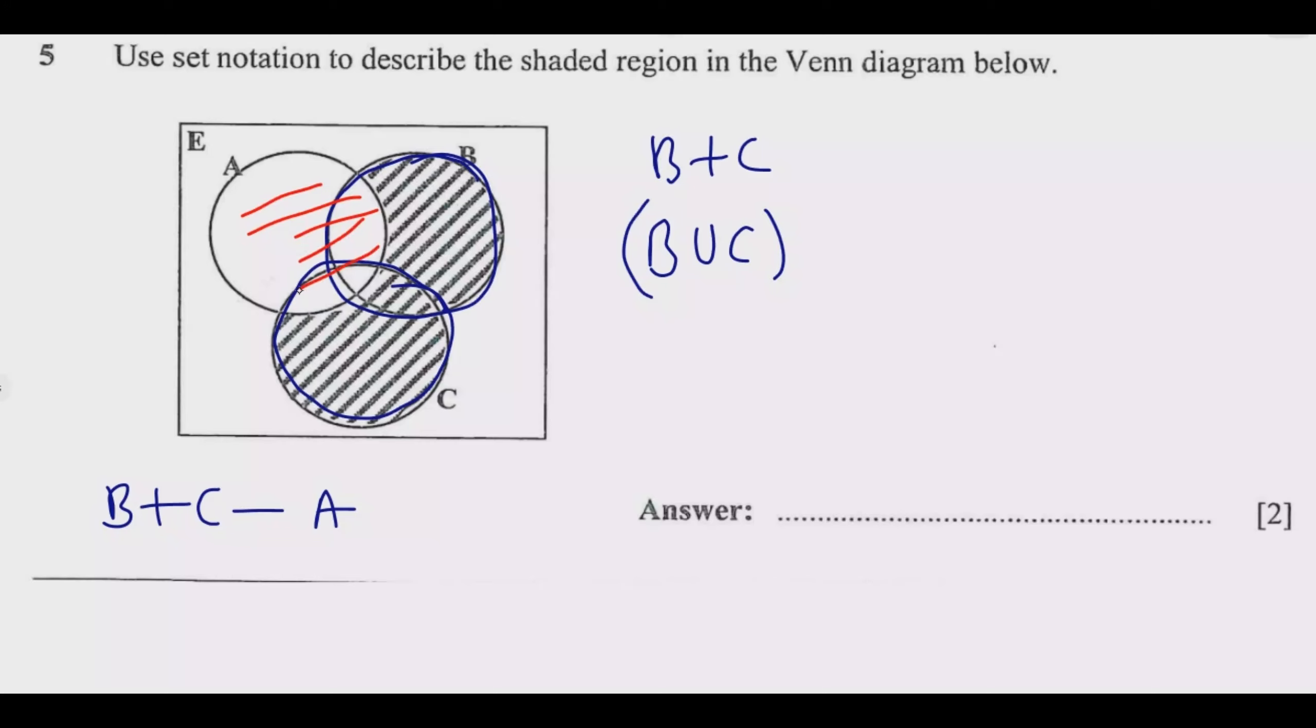Now there is this region that we don't want which is found in A. So we need to remove it from the combination of these two sets. Part of everything that is found also in A is taken out, so that we remain within only B union C, only what is found in B and C and not found in A.